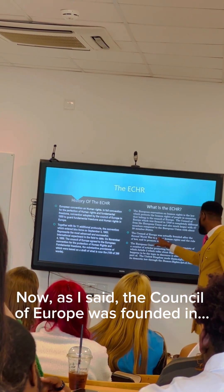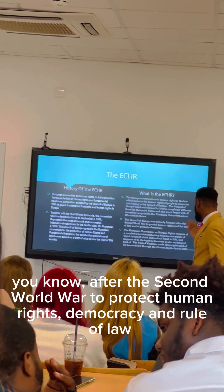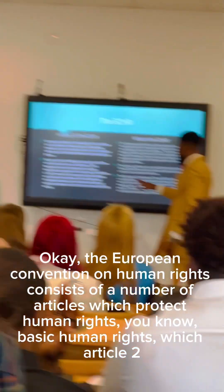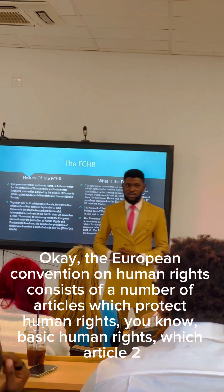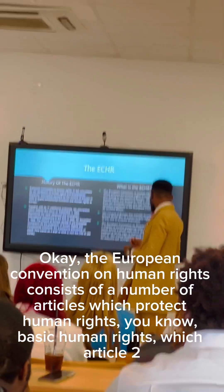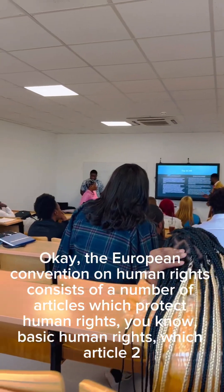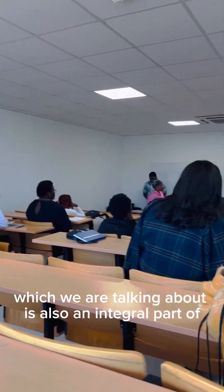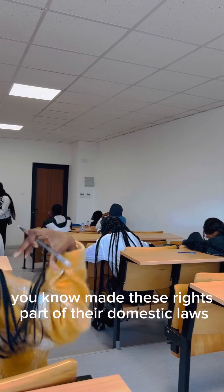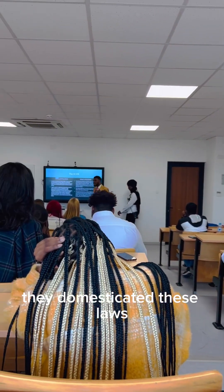The Council of Europe was founded after the Second World War to protect human rights, democracy, and the rule of law. The European Convention of Human Rights consists of a number of articles which protect basic human rights. The United Kingdom made these rights part of their domestic laws — they domesticated these laws.